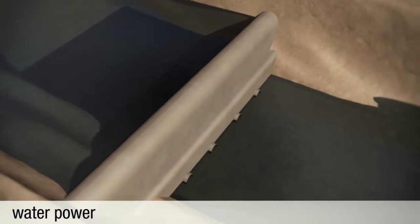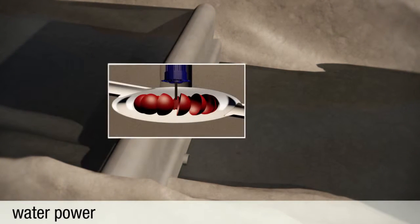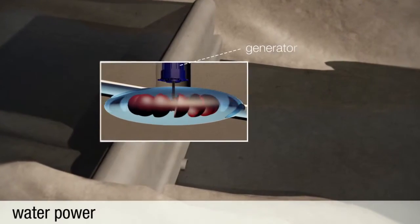Similar to wind power, in hydroelectric power stations, kinetic energy drives a generator, which produces electricity. Wave and tidal power plants use the natural movement of the sea.